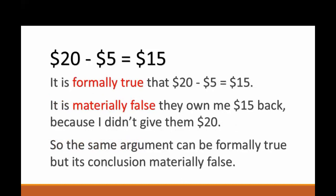So the conclusion of the same argument could be formally true, but materially false. I gave the clerk $20 for a $5 item, therefore the clerk owes me $15 back. If it is not true that I gave them $20 or that the item cost $5, the conclusion that they owe me $15 is materially false. But it is still formally true that $20 minus $5 equals $15.